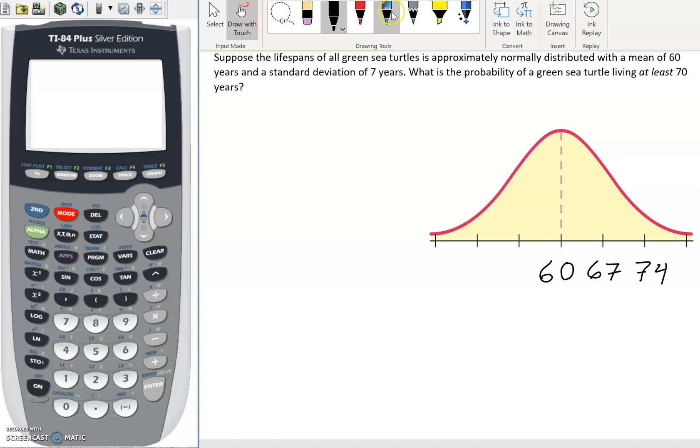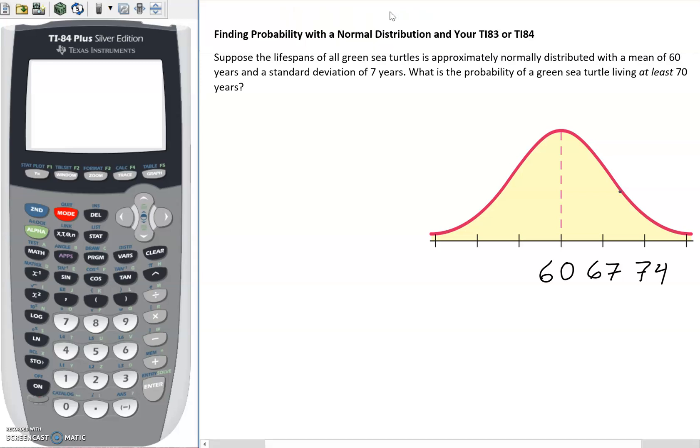What we're interested in here is looking at living at least 70 years. Well that's not exactly 67 or 74, so that's somewhere kind of in between. We're looking for the shaded region here. We're figuring out what is the probability of landing in this shaded region. There's a couple ways to walk through this problem.